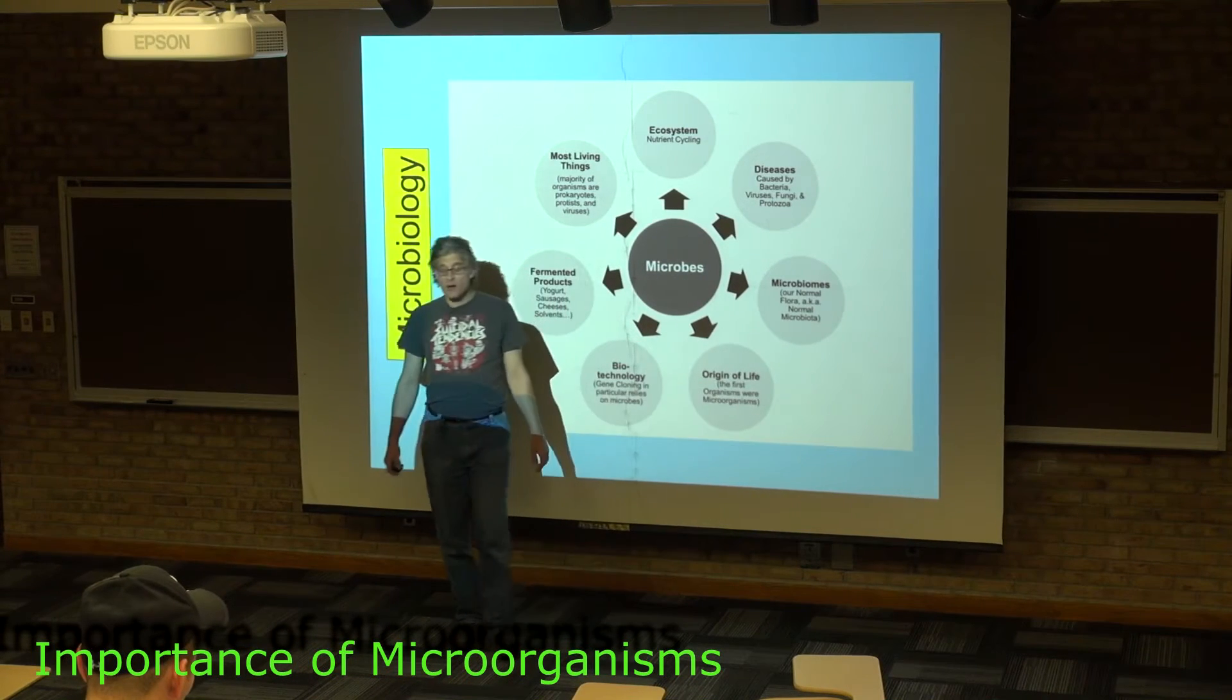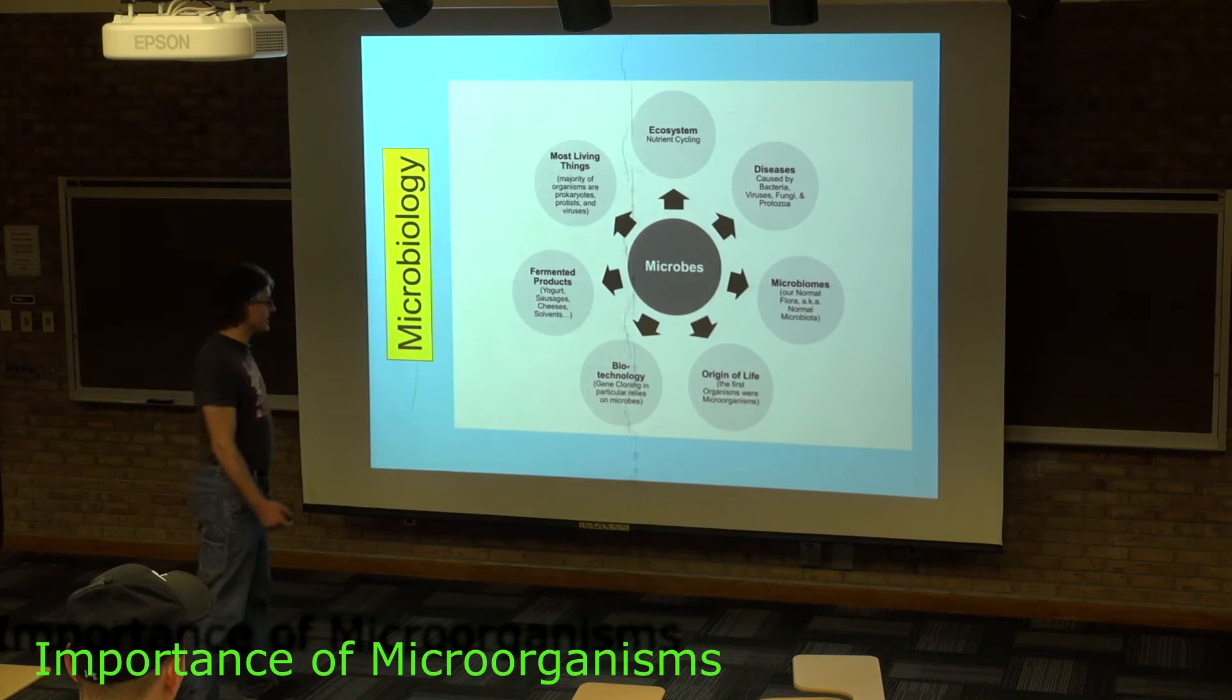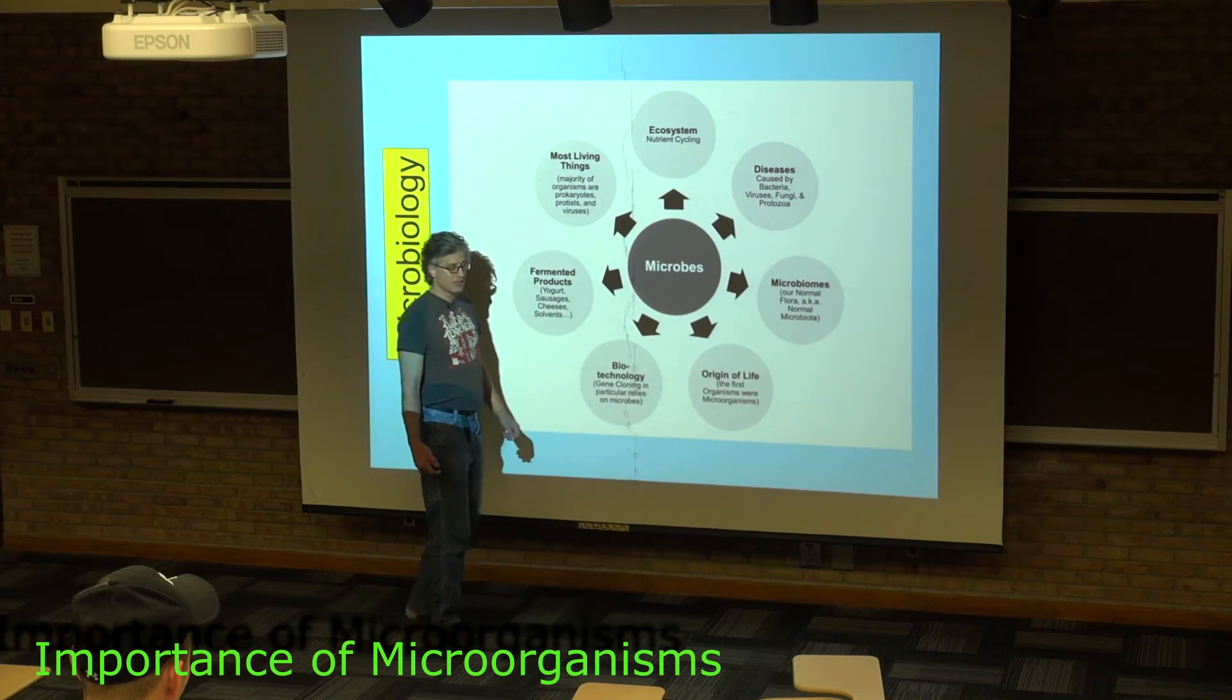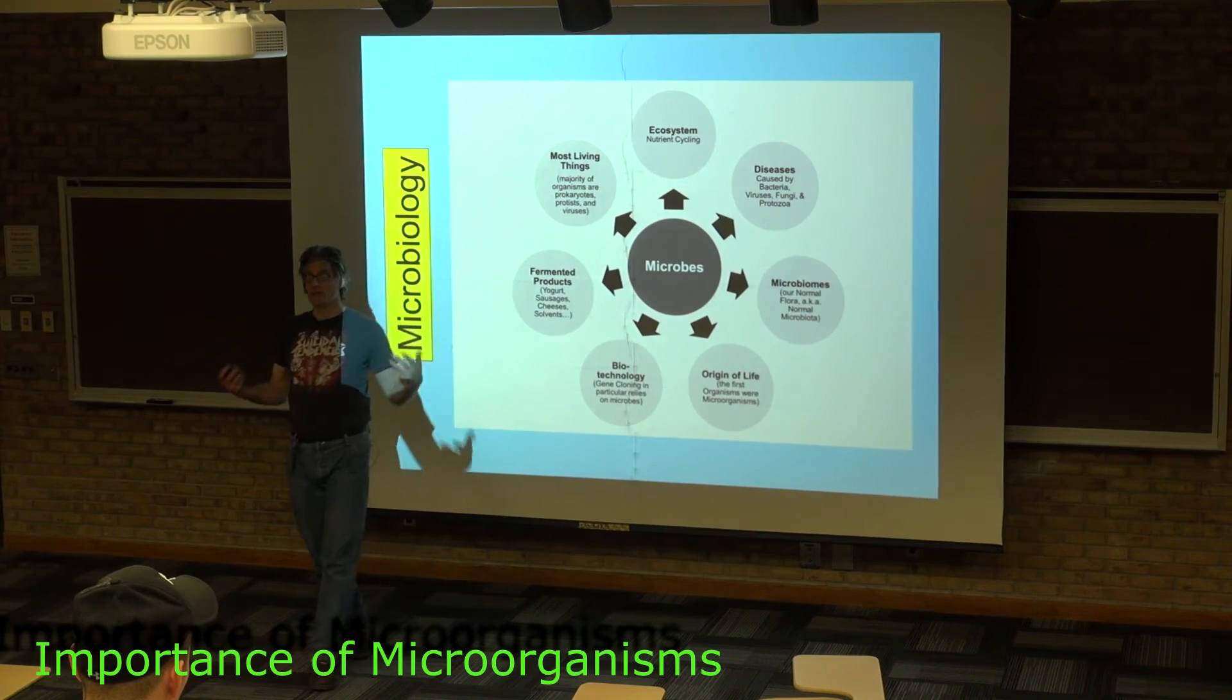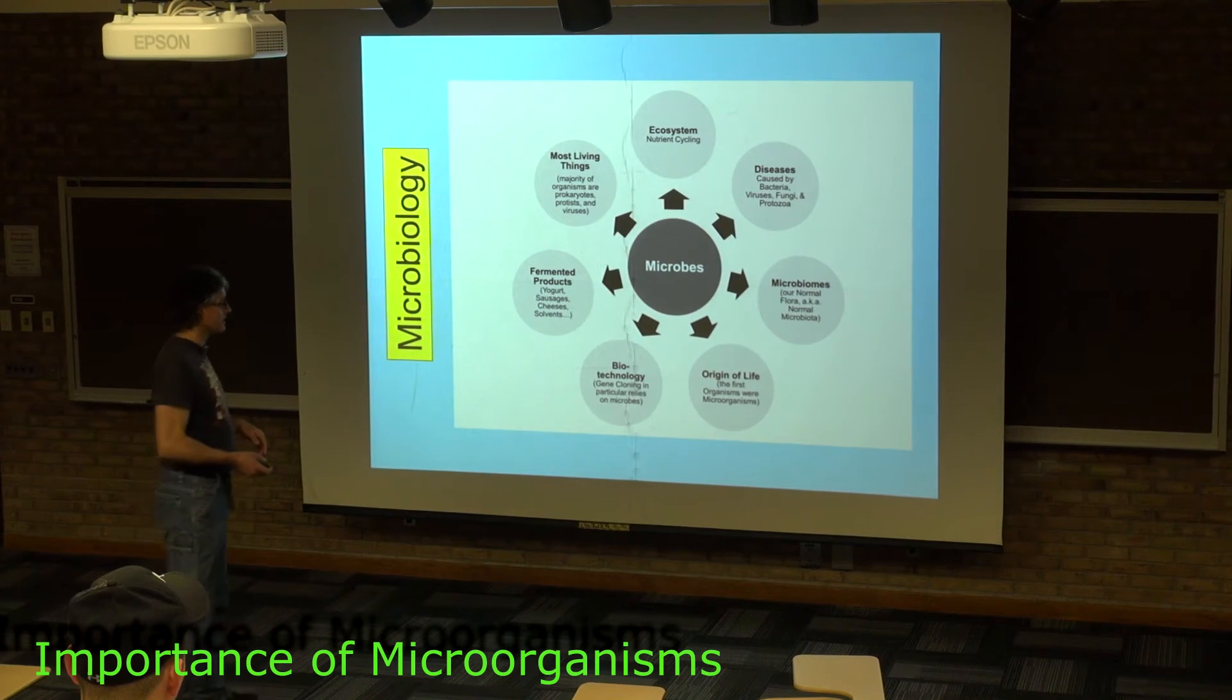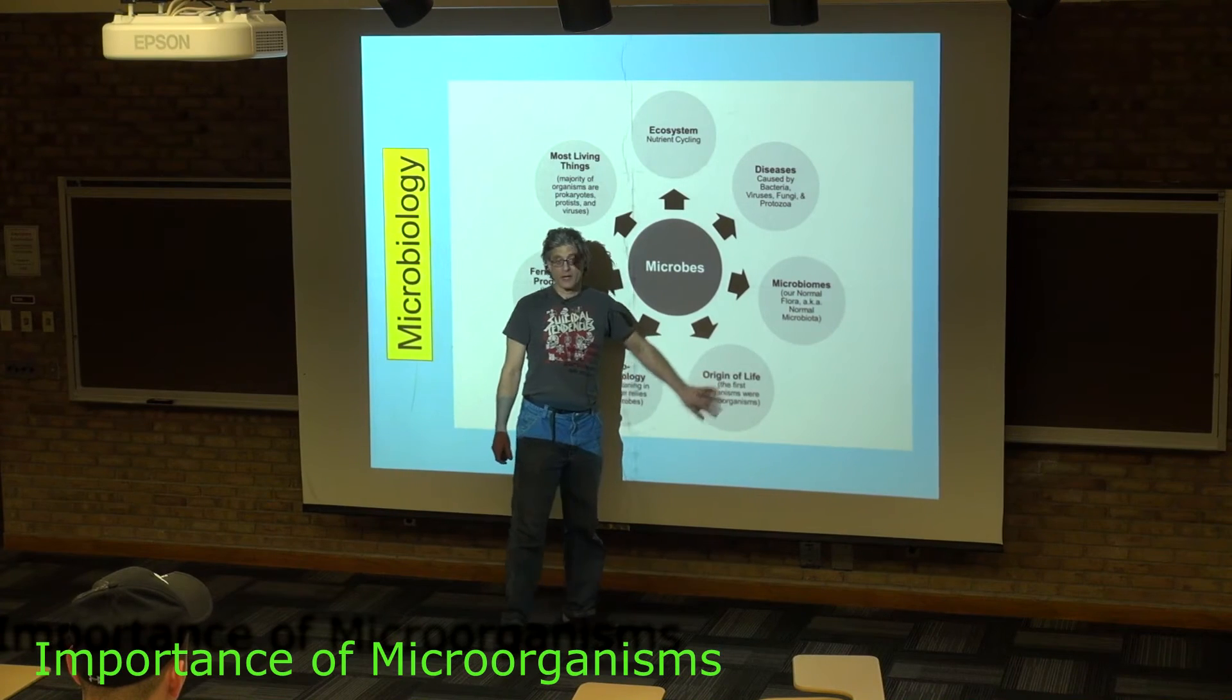Where did life come from? The original organism almost certainly was a microorganism. Things started out small and simple and then got complicated. In fact, as we go talking about the fungi and the plants and the animals, we'll be talking about basically how things get more complicated.